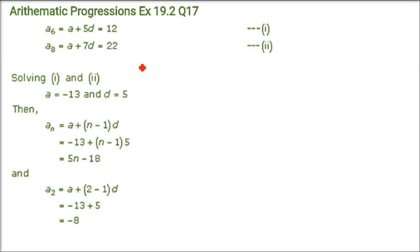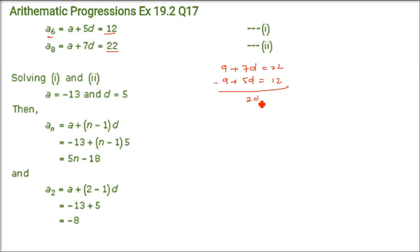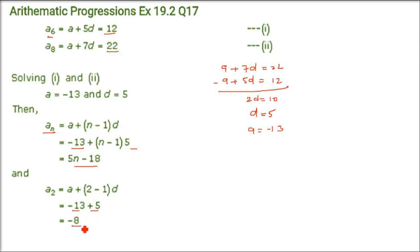Find the second term and the nth term of an AP whose 6th term is 12 and 8th term is 22. A6 equals a + 5d equals 12, and A8 equals a + 7d equals 22. Subtracting: 2d equals 10, so d equals 5. Putting back: a equals minus 30. The nth term is a + (n−1)·d, which gives 5n minus 35. And A2 equals a + d equals minus 30 + 5 equals minus 25. Wait — a plus d gives minus 25, so A2 equals minus 25.